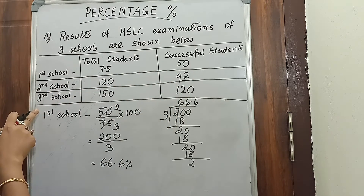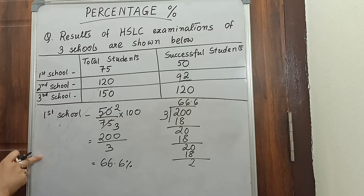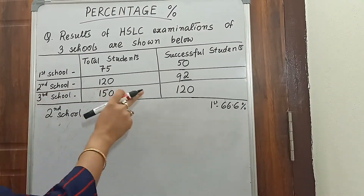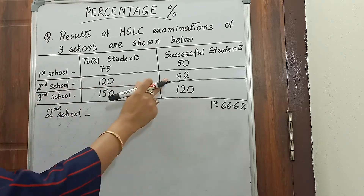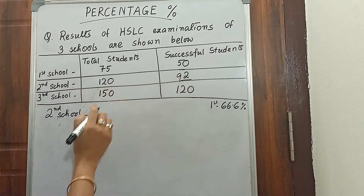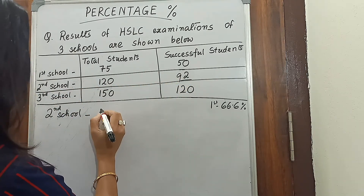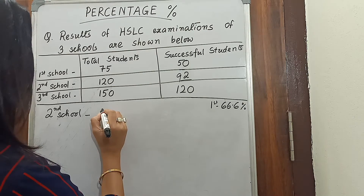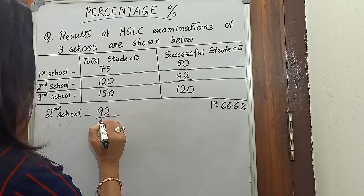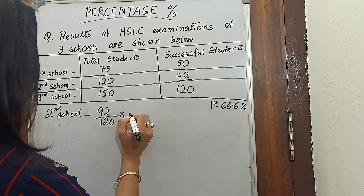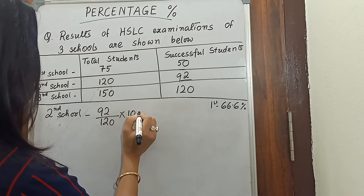Now let us find out in the same way for the second school. In the second school, 92 students passed out of 120. So we will multiply this fraction — 92 divided by 120 — by 100.